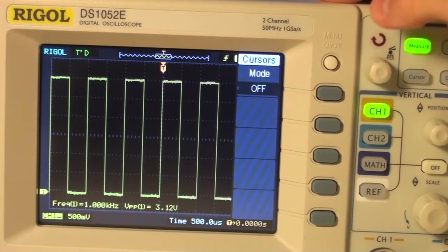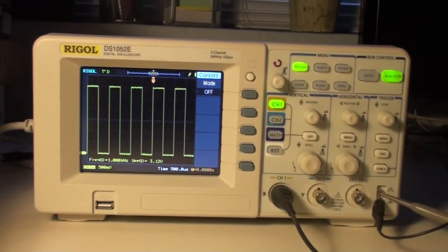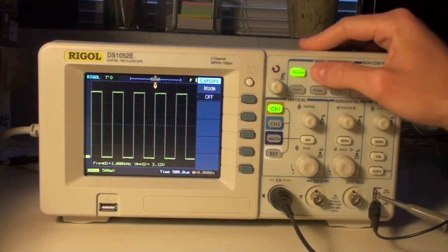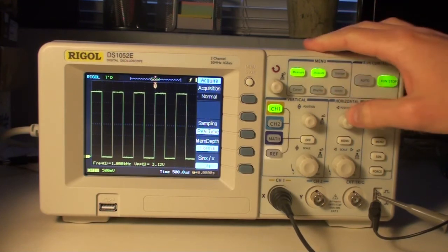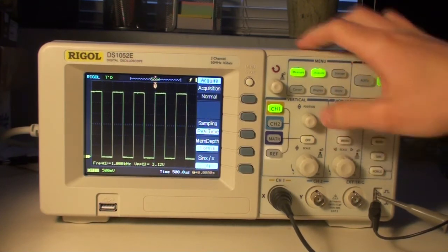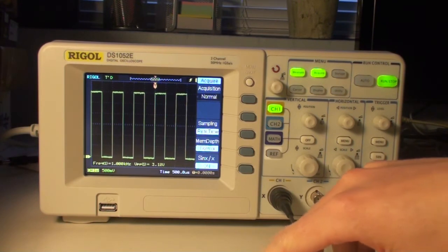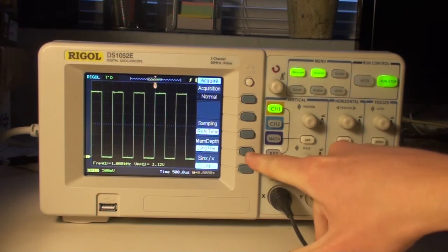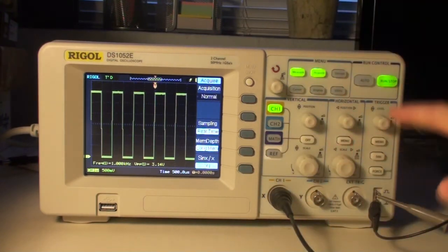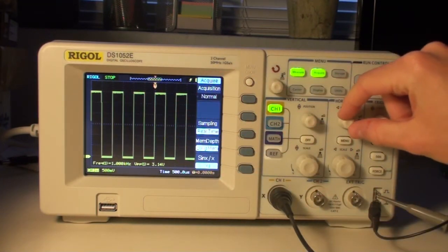Okay, let's disable the cursor and then let's have a look at the Acquire function. The Acquire function up here enables us to do different samplings. We can change the sample depth, the memory depth, of how many samples are acquired and stored into the internal RAM. This is great if you're looking at big waves, big samples. You can set the memory depth to large, long, and then you can stop, for example, and then you can start viewing this by moving the position slider.